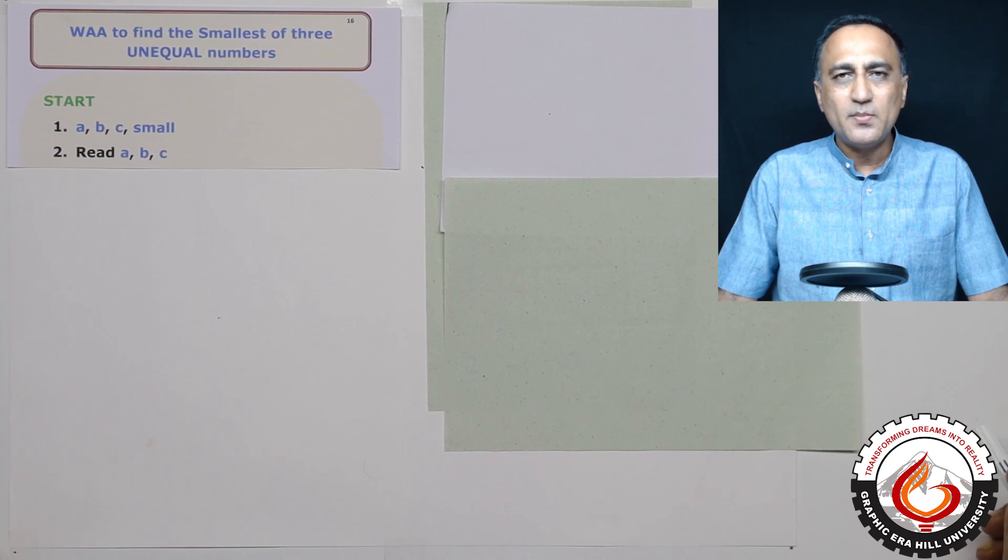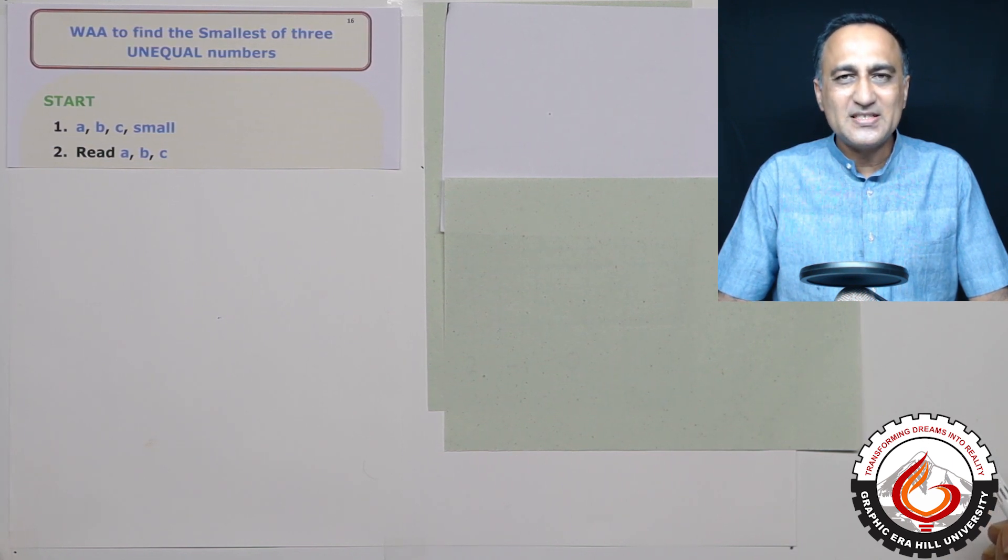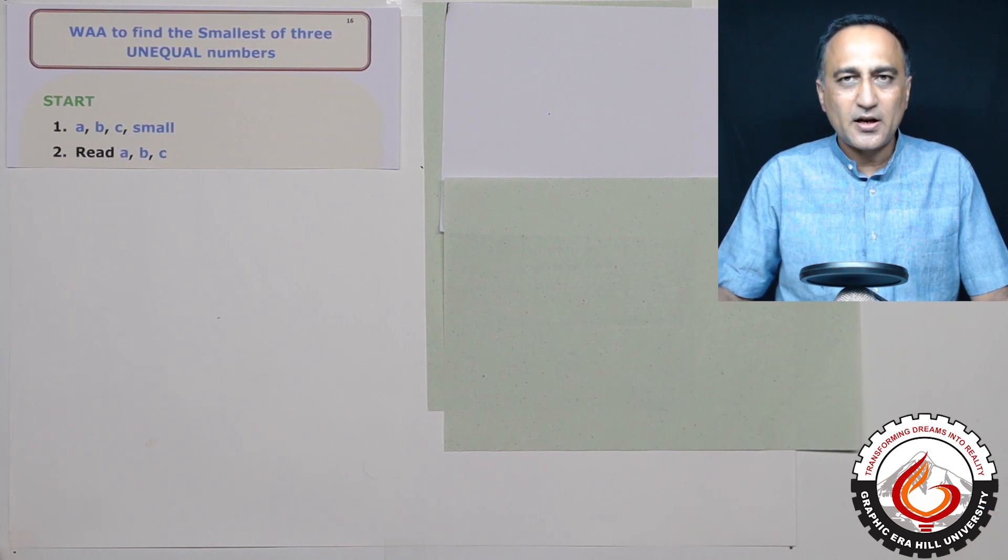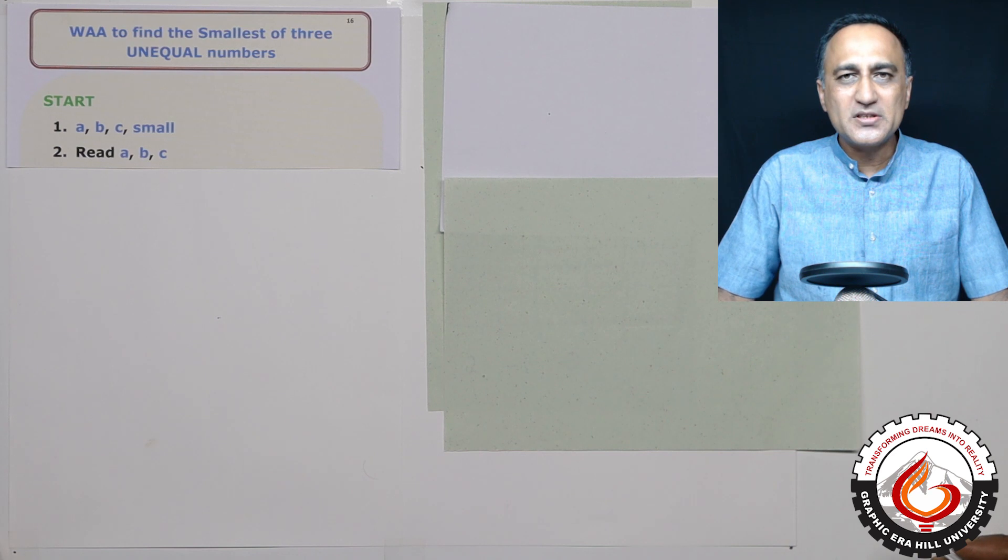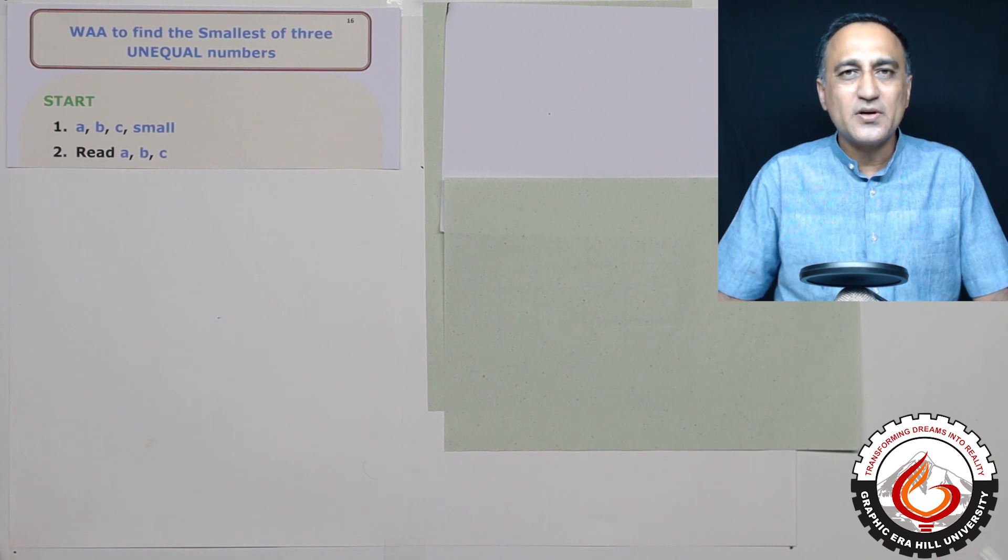Welcome back to one more video session on algorithms using if statements or decision control statements. In this particular algorithm, we are going to find out the smallest of three numbers. For example, if my numbers happen to be 5, 0, and 2, I should be saying that 0 is the smallest out of these three numbers.